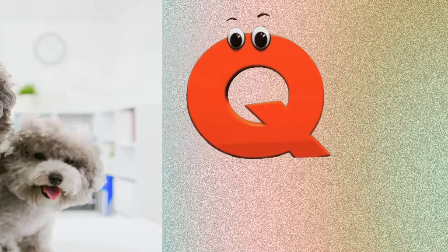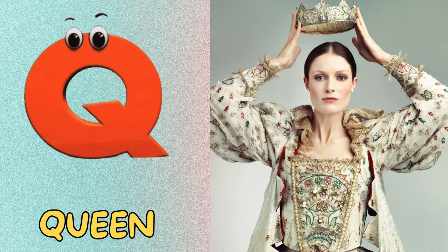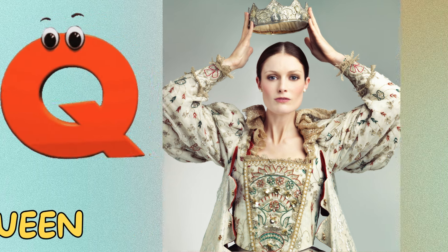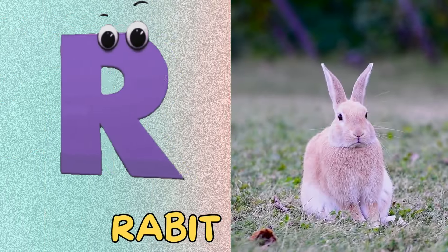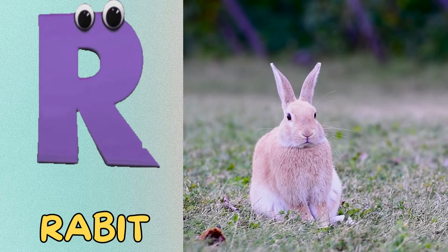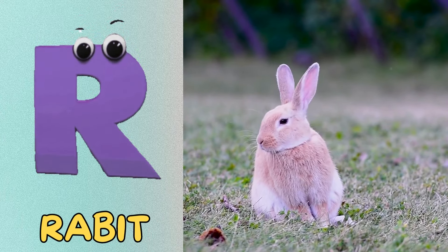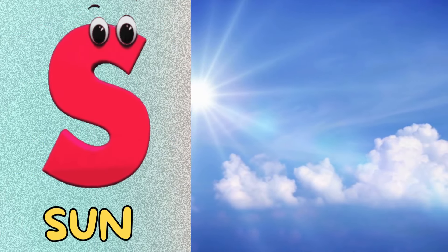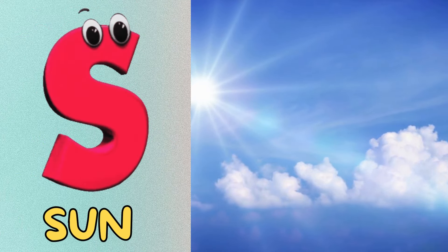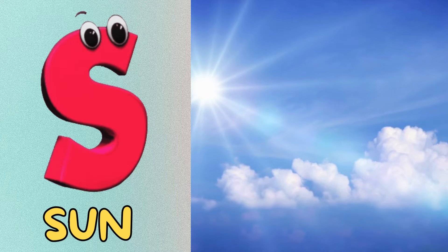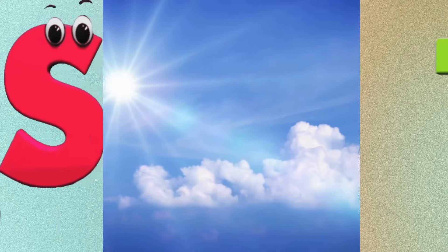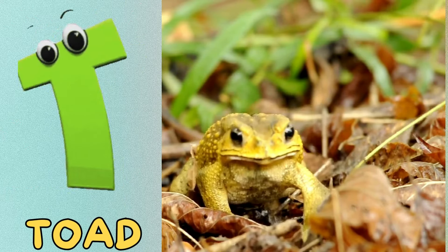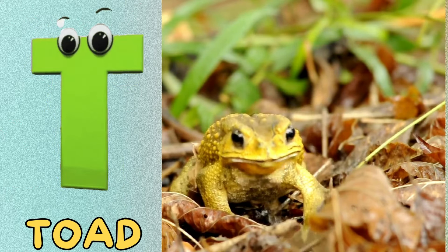Q is for queen, qu-qu-queen. R is for rabbit, r-r-rabbit. S is for sun, s-s-sun. T is for toad, t-t-toad.